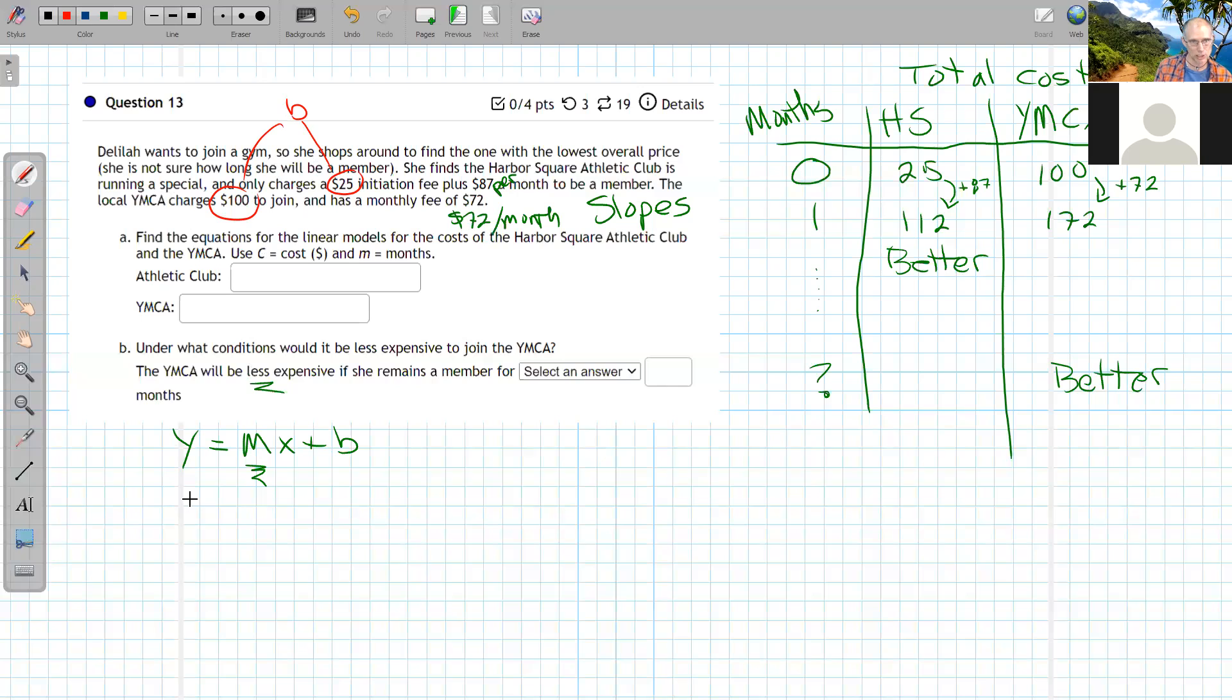Using C for cost and M for months, the cost for Harbor Square is C = 87M + 25. For the YMCA, the cost is C = 72M + 100. Those are the first two equations for this problem.